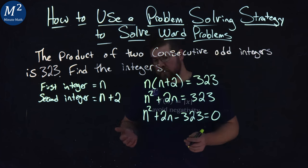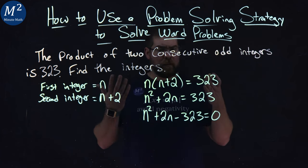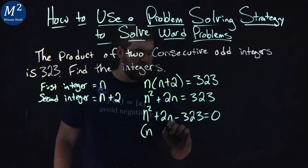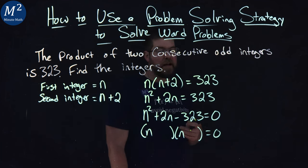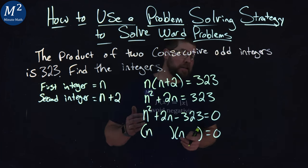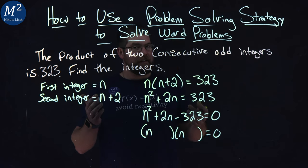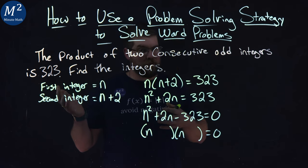Now I can solve this quadratic in many ways, but I'm going to solve it by factoring. What two numbers multiply to be negative 323 but add to be 2? I know off the top of my head, since I've also looked at this problem, negative 17 and positive 19.